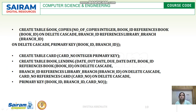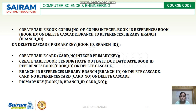Once the publisher table is created, the next one is CREATE TABLE book_copies. This table consists of number_of_copies which is of integer data type, book_ID referencing book(book_ID) on DELETE CASCADE, branch_ID referencing branch(branch_ID) on DELETE CASCADE, and the primary key is (book_ID, branch_ID).